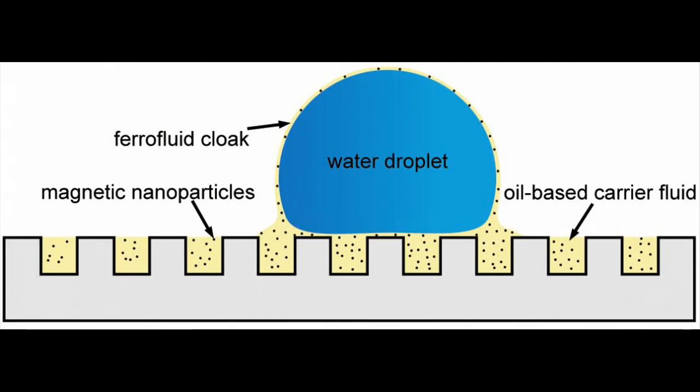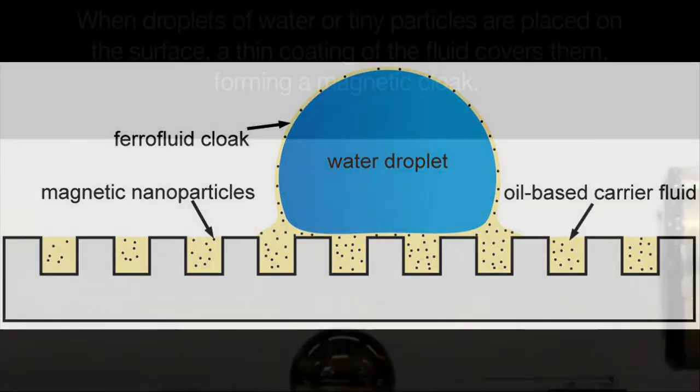The system makes use of a microtextured surface with bumps or ridges just a few micrometers across that is then impregnated with a fluid that can be manipulated. For example, an oil infused with tiny magnetic particles or ferrofluid, which can be pushed and pulled by applying a magnetic field to the surface.